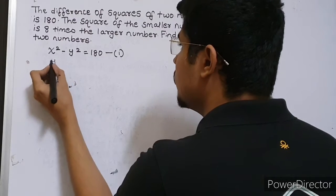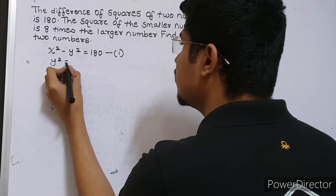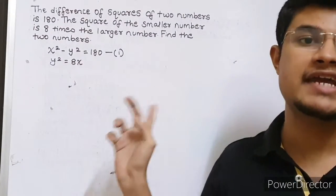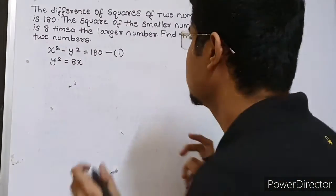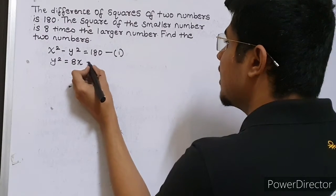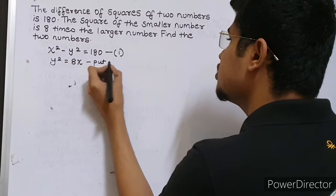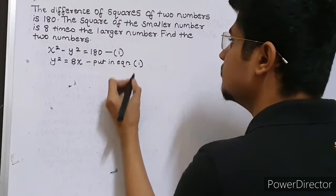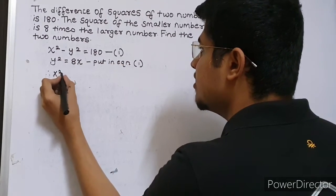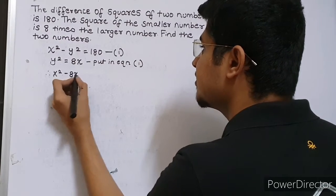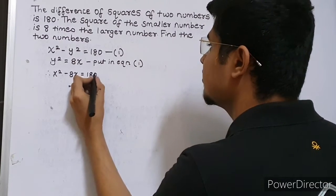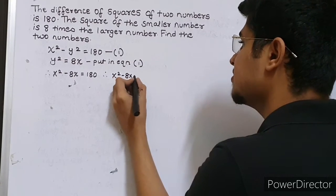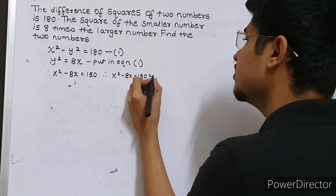Therefore y squared is equal to 8x, since the square of the smaller number is 8 times the larger number. I will directly put this into equation 1. Therefore x squared minus 8x is equal to 180, and therefore x squared minus 8x minus 180 is equal to 0.